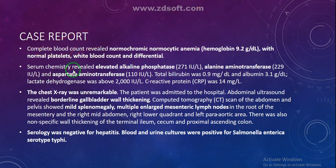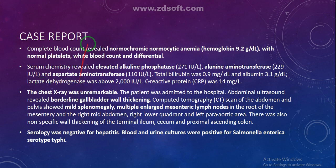Serum chemistry revealed elevated alkaline phosphatase, alanine aminotransferase, and aspartate aminotransferase — these are liver enzymes. Total bilirubin was 0.9 mg/dL, albumin was 3.1 g/dL, lactate dehydrogenase was above 2000 IU/L, and C-reactive protein was 14 mg/L. The chest X-ray was unremarkable and the patient was admitted to the hospital.